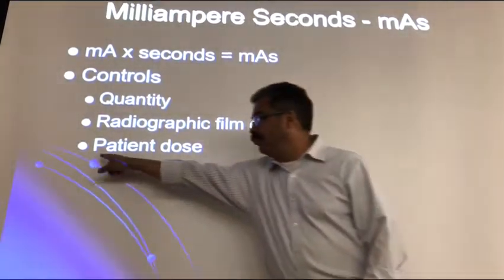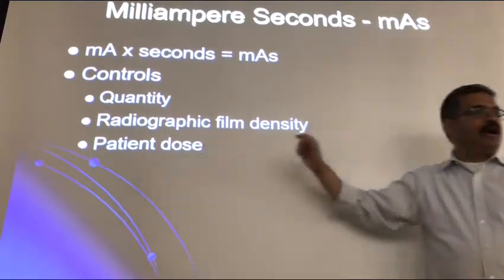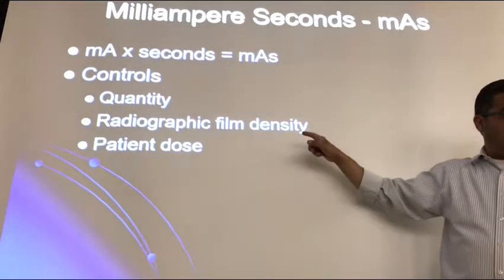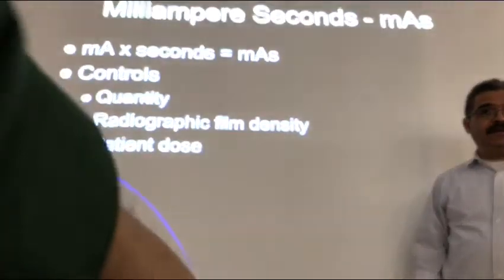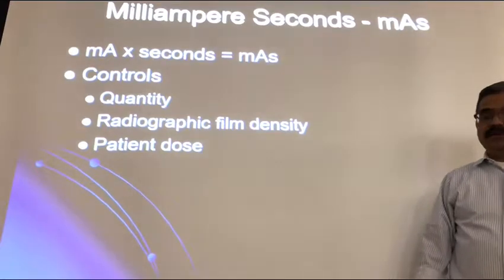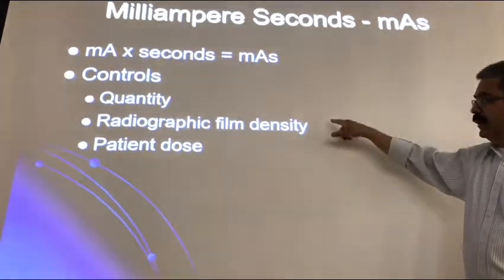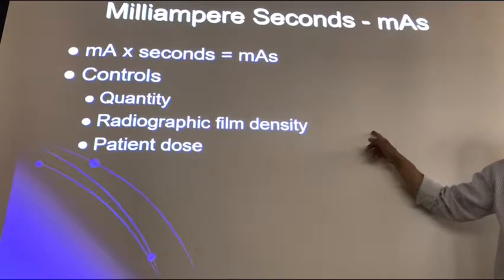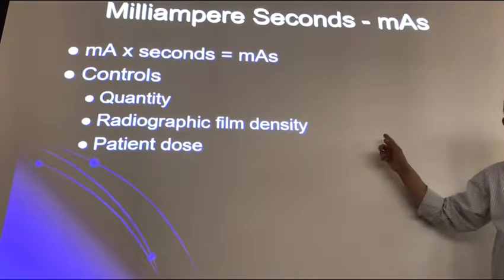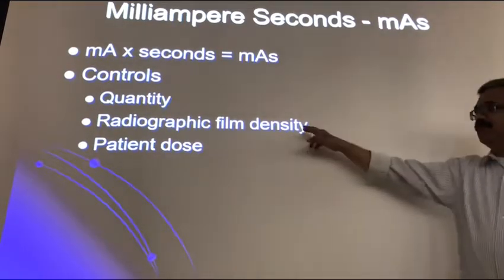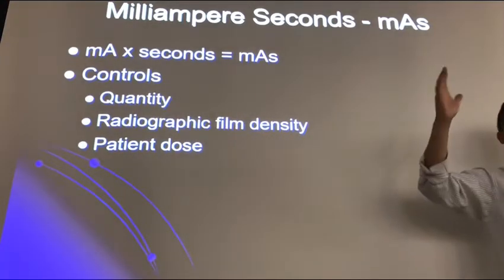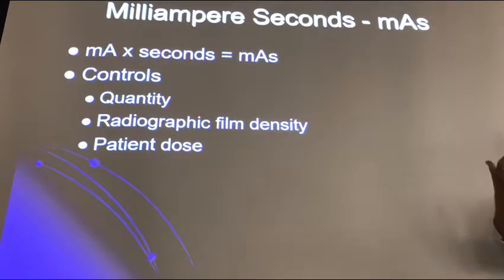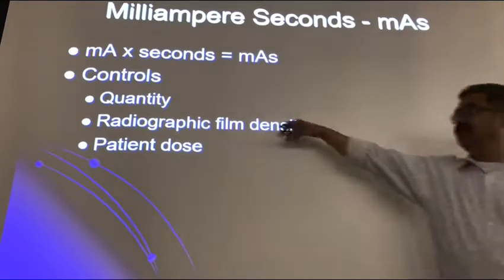With computerized systems, doubling the MAS doubles the exposure of the plate, and increases patient dose — but not necessarily density. With computerized systems, it's the computer histogram and algorithms that really give density to an image, not the exposure quantity directly.